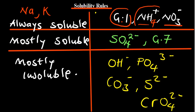The second one: we are going to know the things that are mostly soluble. So sulfates and group 7 elements — the halides. That is, for example, chlorine, bromine, iodide — they are mostly going to be soluble. There are a few exceptions that we are going to talk about.